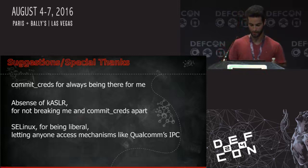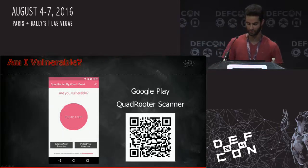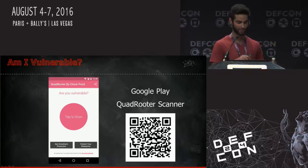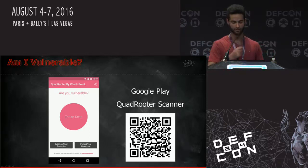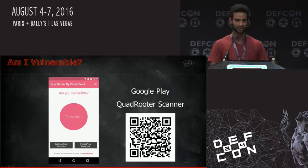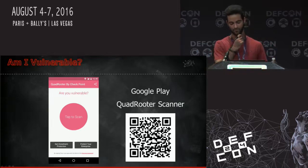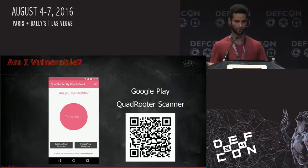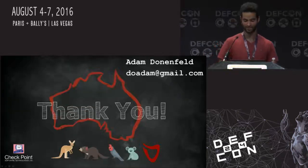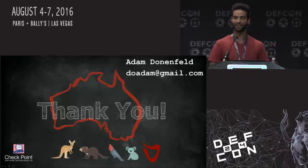We created an app which should be published now. It is called QuadRoot Scanner. Using this app, you can check if your device is vulnerable. For Ashmanian Devil it definitely is, but for the rest of them you might be surprised. It is also searchable on Google Play — just search QuadRoot Scanner. Thank you very much. I hope you enjoyed the presentation.